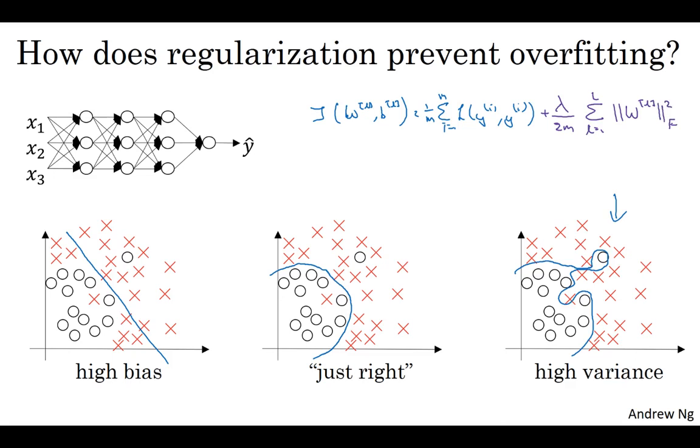So why is it that shrinking the L2 norm or the Frobenius norm with the parameters might cause less overfitting? One piece of intuition is that if you crank the regularization lambda to be really, really big, they'll be really incentivized to set the weight matrices W to be reasonably close to zero. So one piece of intuition is maybe it'll set the weight to be so close to zero for a lot of hidden units that is basically zeroing out a lot of the impact of these hidden units.